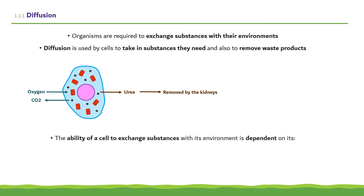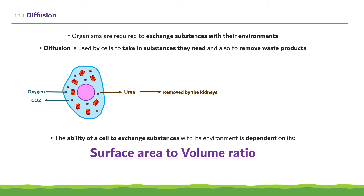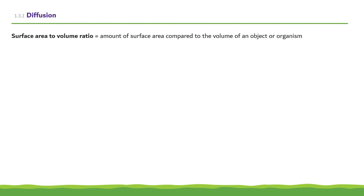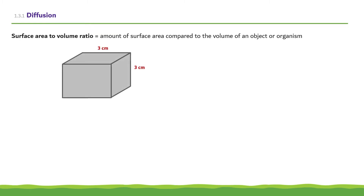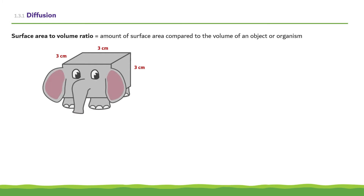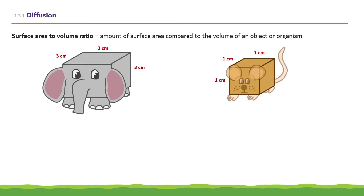The ability of a cell to exchange substances with its environment is dependent on its surface area to volume ratio. The surface area to volume ratio is the amount of surface area compared to the volume of an object or organism. Let's take a box 3cm high, 3cm wide and 3cm long and use it as a model for an elephant. Let's also take a box 1cm high, 1cm wide and 1cm long and use it as a model for a mouse.